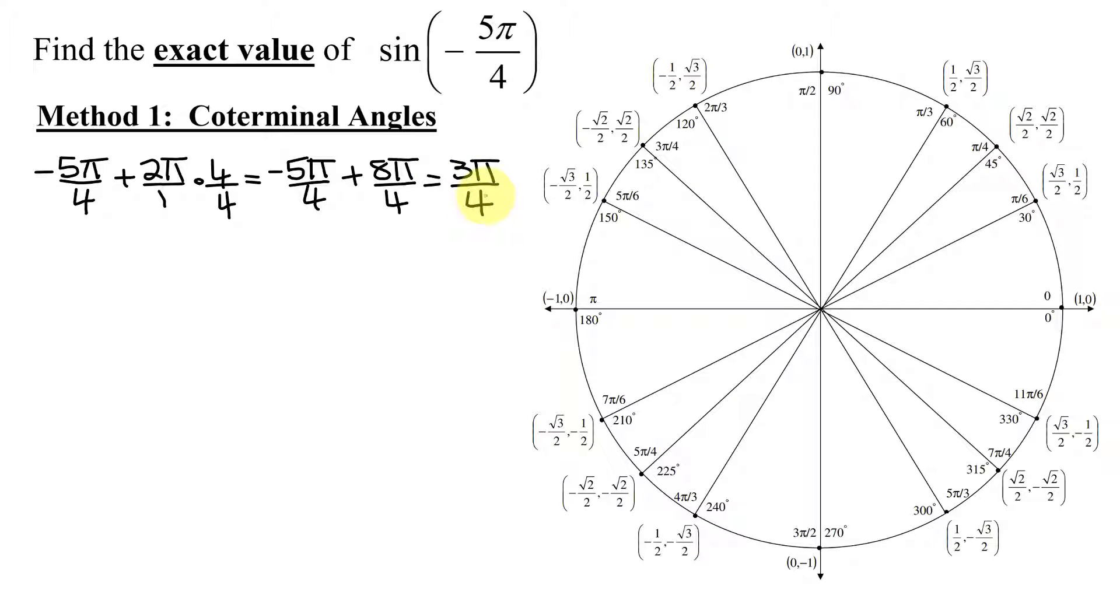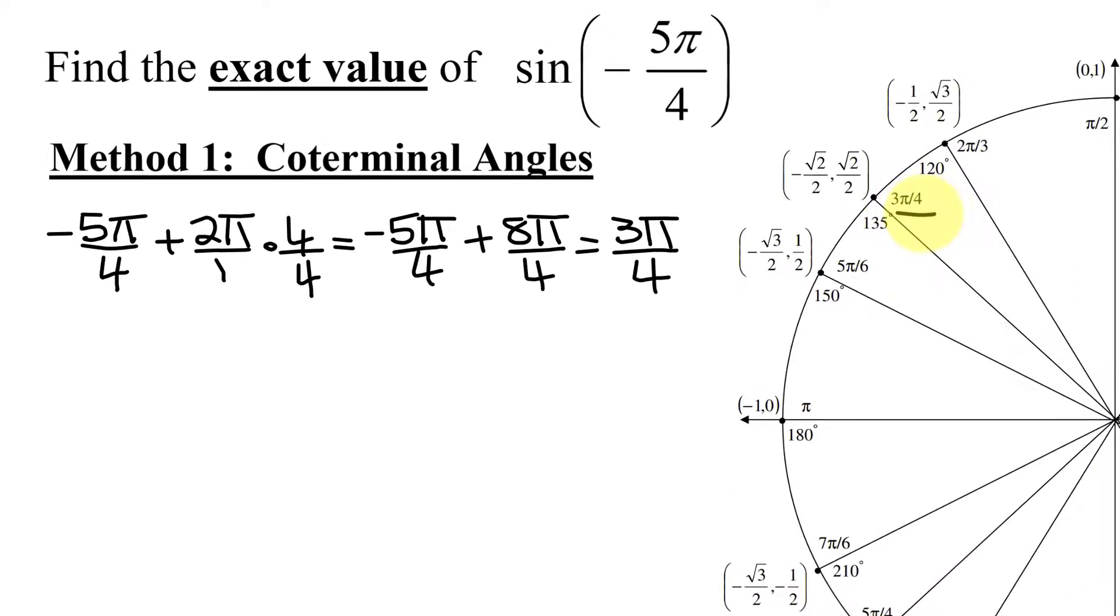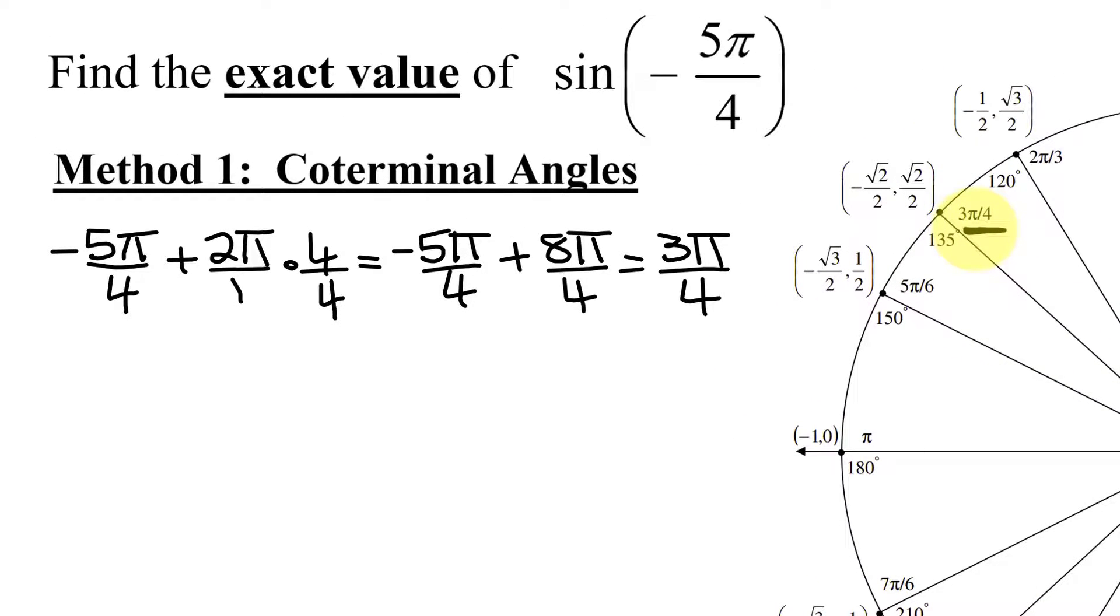Now is 3π over 4 on my unit circle? Yes, it is right over here. So the sine of negative 5π over 4 equals the sine of its coterminal angle of 3π over 4.